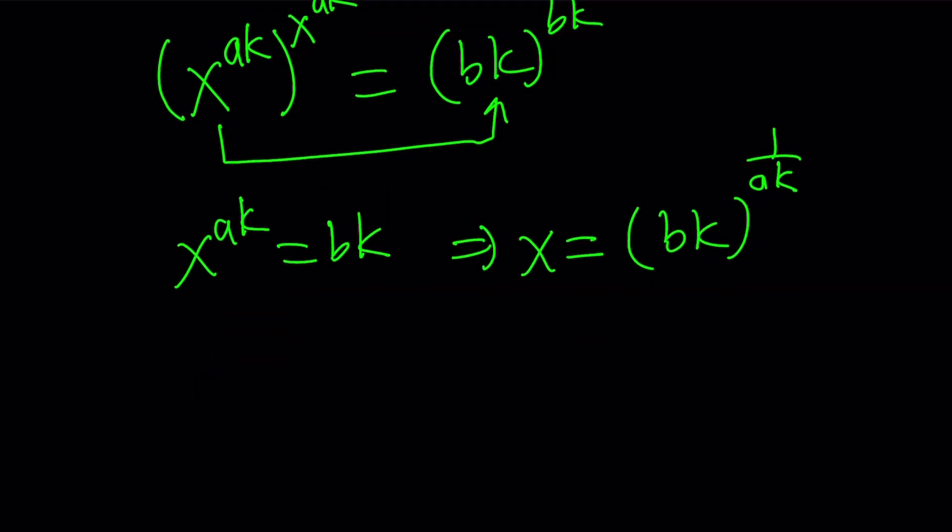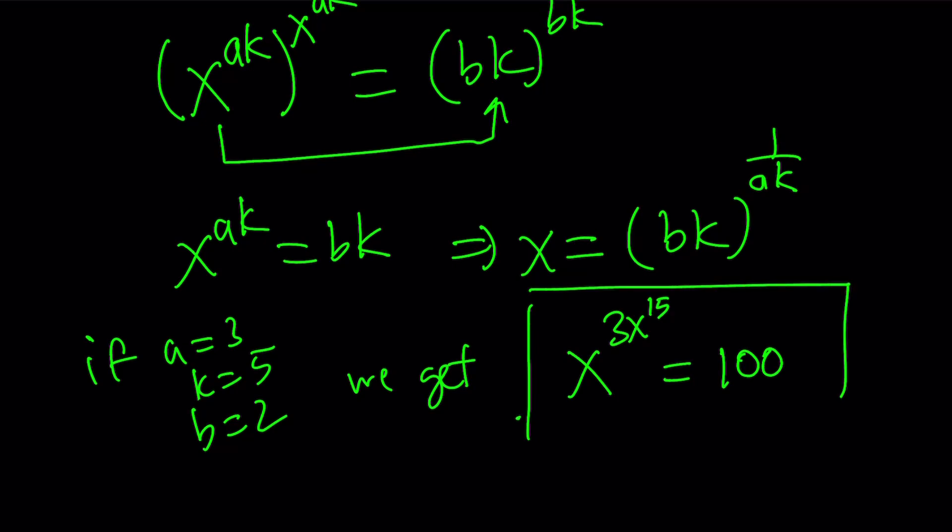So in our example if a is equal to 3, k is equal to 5, and b is equal to 2, then we get x to the power 3, x to the power 15 equals 100, which is 10 squared. And you already know how to solve this. Now you can go ahead and play around with this. Please let me know how that goes. You can replace a with 2, k with 4, b with 7, whatever. And now you're going to come up with a different problem every time.